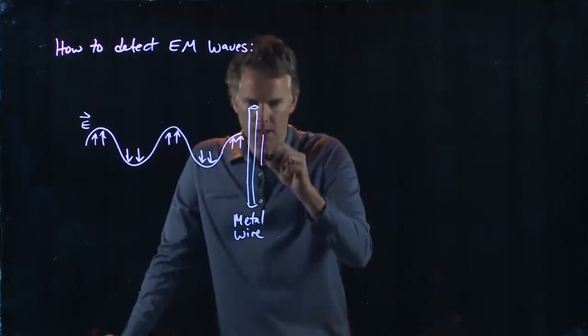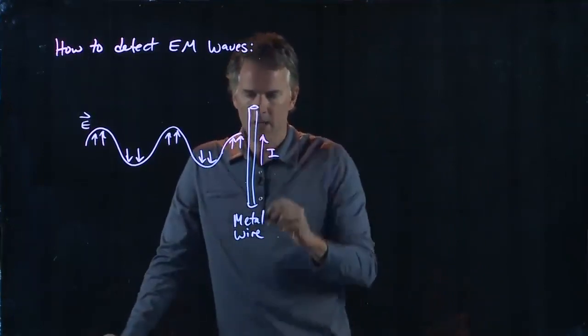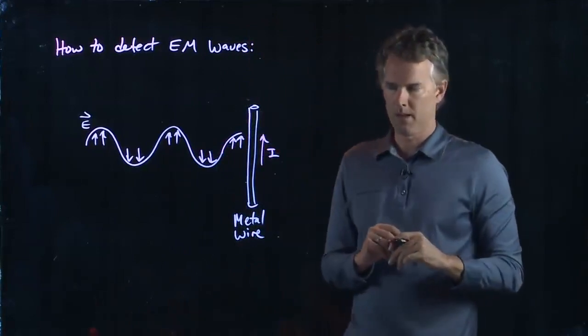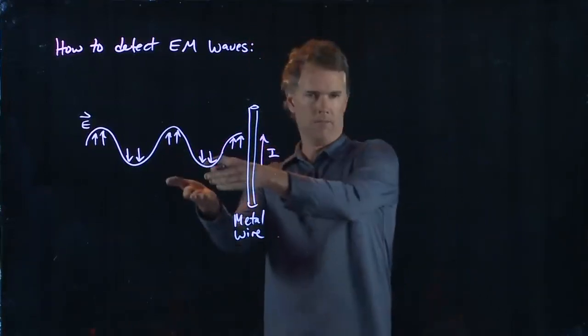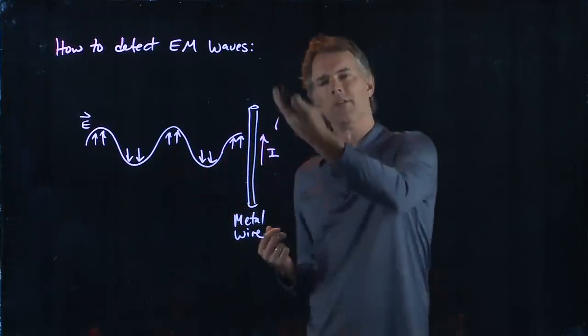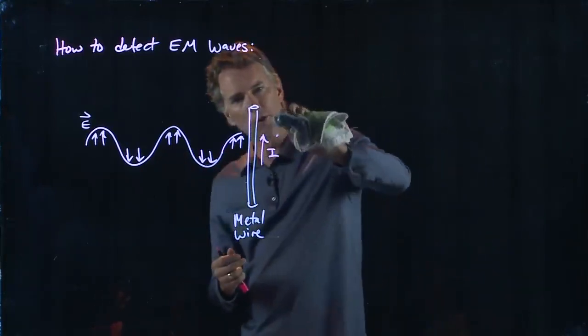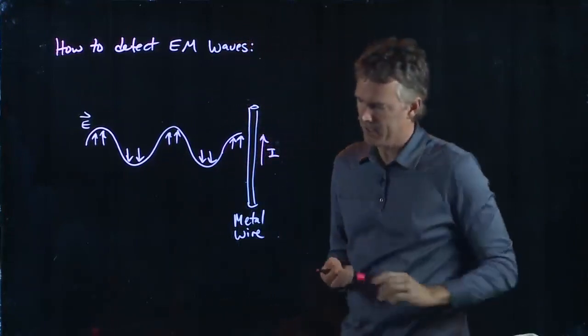And so there is a current, I, which develops in the wire. And later when the electric field is pointing down, the current is going to flip and come back down. So the current will in fact oscillate up and down.